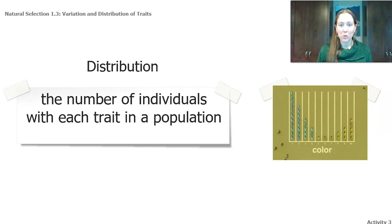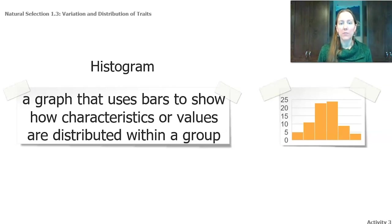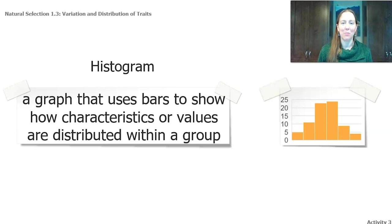When we look at the distribution of our ostrilopes' color, most of them are blue, many are yellow, and very few are green. Our final important word is histogram — a graph that uses bars to show how characteristics or values are distributed within a group. It's much easier to look at changes in populations if you can visually represent what the population looked like before and after. We'll use histograms a lot to show variation in populations.